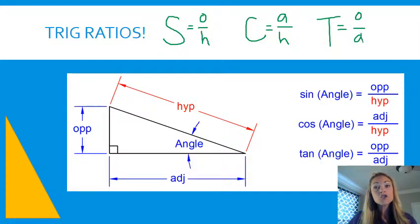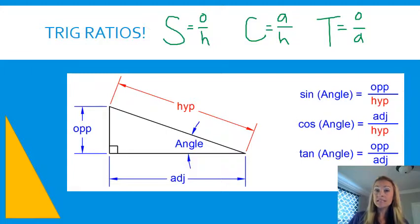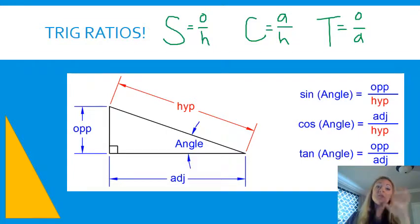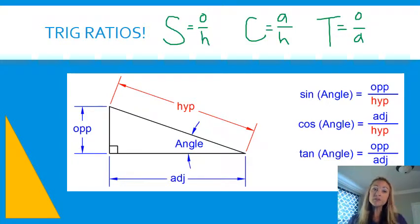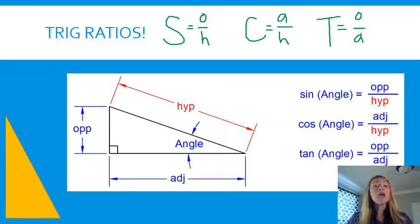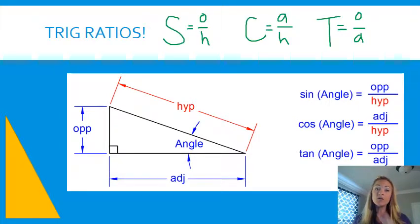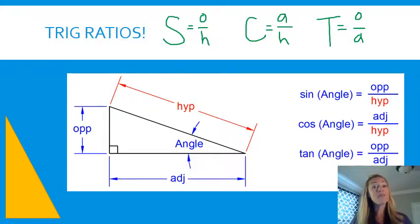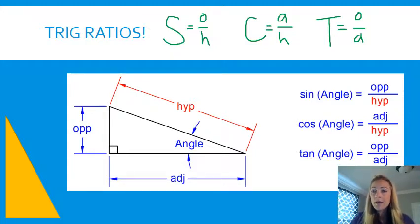Tangent is TOA — the tangent of any angle equals the opposite over the adjacent. We use trig ratios for right triangles. They are special ratios, meaning special connections between the angles and the sides of a right triangle. You have three options: sine, cosine, and tangent. Every right triangle has two legs — an opposite leg and an adjacent leg — and a hypotenuse.